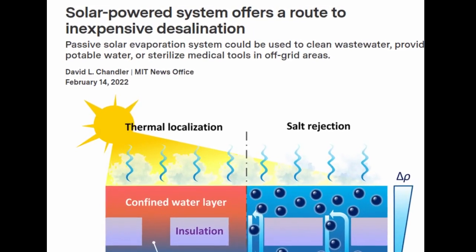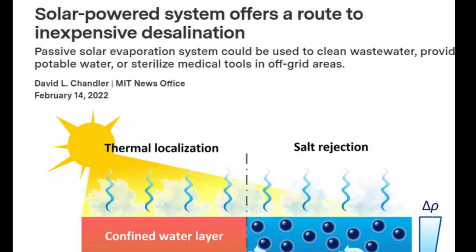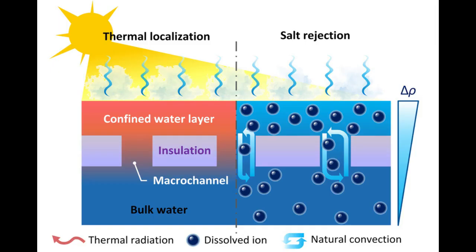MIT researchers have developed a solar-powered desalination system that is more efficient and less expensive than previous methods. An estimated two-thirds of humanity is affected by shortages of water, and many such areas in the developing world also face a lack of dependable electricity. Widespread research efforts have thus focused on ways to desalinate seawater or brackish water using just solar heat.